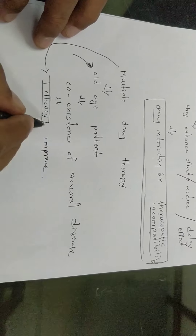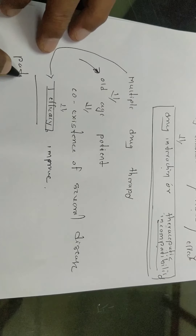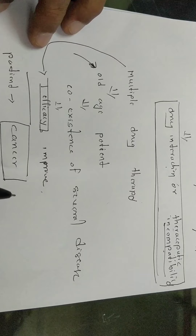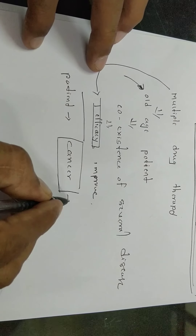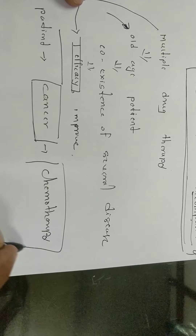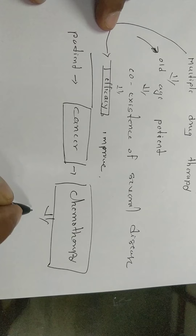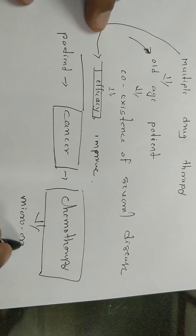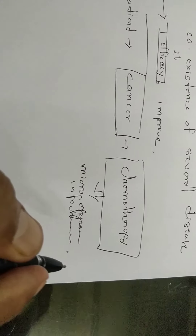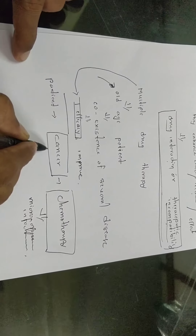Another example: a patient suffering from cancer uses chemotherapy — chemical substances used in the treatment of cancer, those caused by microorganisms, or infectious diseases. In such conditions, multi-drug therapy is used.